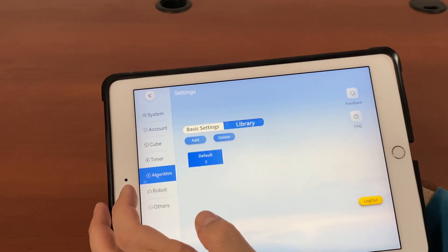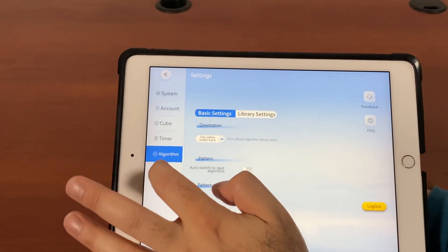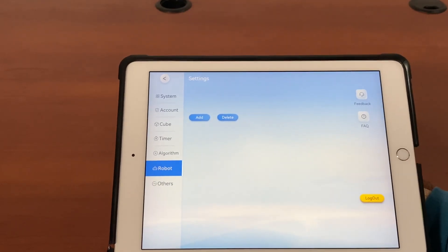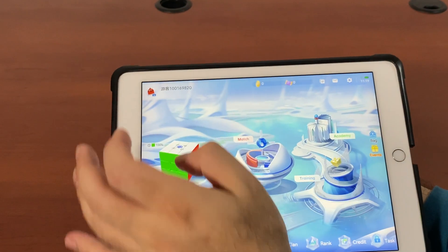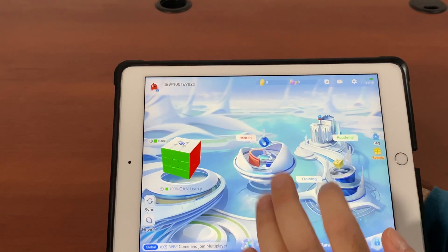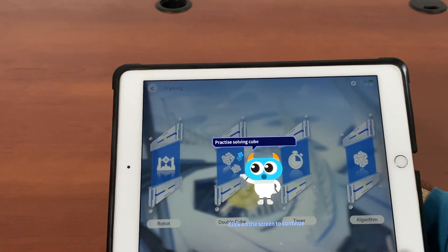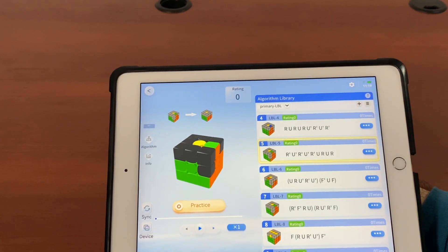There's a timer option available, the algorithm, and then there's the section for your robot which I'm going to show in the future. The Gan robot solves it automatically as well. There's training that you can take so you can go through the algorithm here for instance.